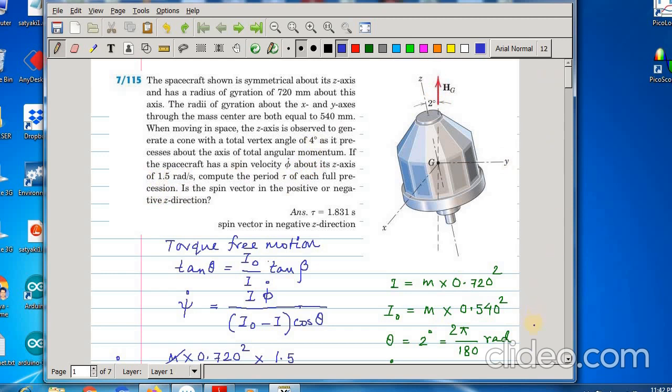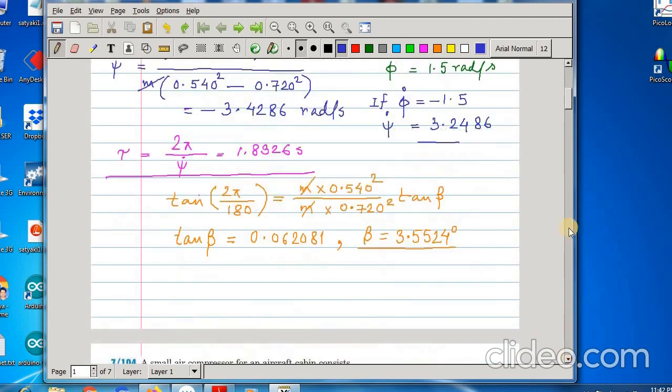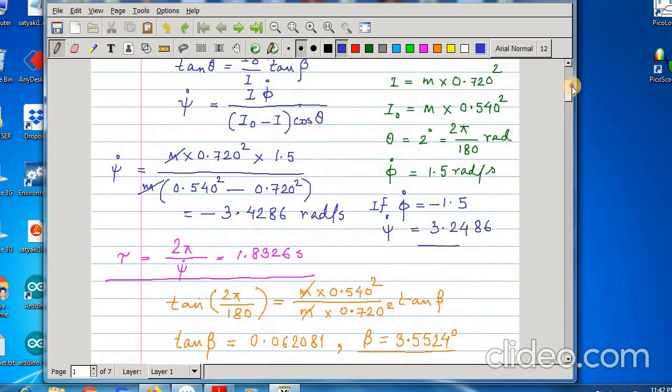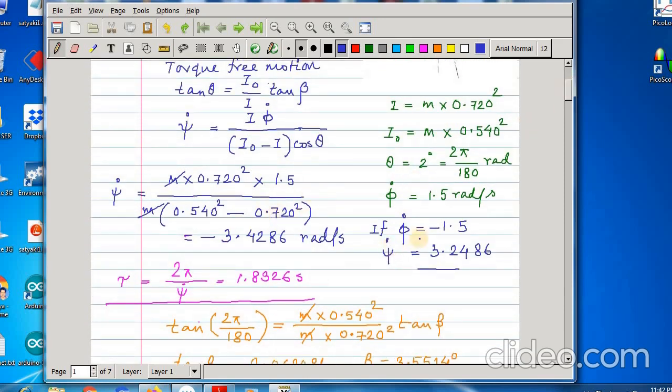In our case phi dot is negative. So, if phi dot is minus 1.5 then you get psi dot to be positive. And what is tau? That is twice pi one complete revolution by the rate of precession and this is the period.